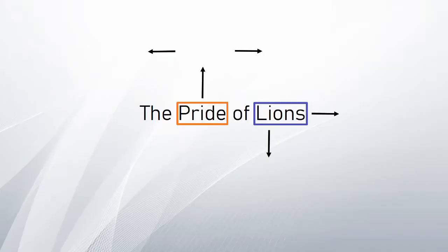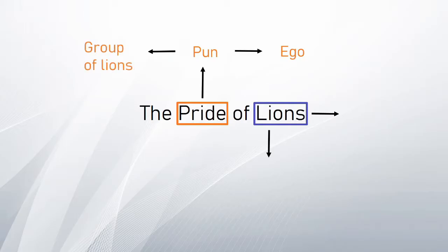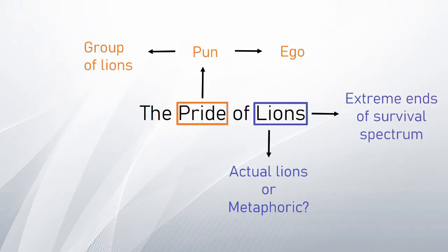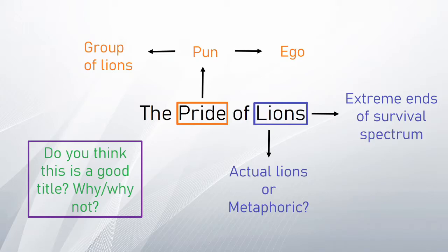Now, to analyze the title — The Pride of Lions. This is surely an interesting title considering there is an evident use of the pun on the word pride. Either it could mean ego, or it could mean a group of lions, which is called a pride. But when you begin reading the poem with the expectation of a group of lions, even if the lions are symbolic of a certain type of people, your expectation is not entertained. There is only a persona and her fiancé, leaving room for our first assumption: the ego of lions. Also note that lions are creatures on the extreme ends of the survival spectrum — either at the top of their food chain or dead, with no in-between. Bear that in mind when you analyze the poem.